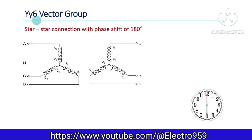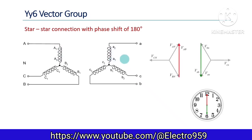Next up is the YY6 group. Both the primary and secondary windings are star connected, but the polarity of each winding is reversed on the secondary side. On the primary side it is A1, A2, and on the secondary side it is A2, A1. This reversal of polarity is done in all other windings as well. This results in a 180-degree phase shift in the secondary voltages, represented by the clock hand position at 6 o'clock. The simplified connection diagram and displacement diagram are shown accordingly.